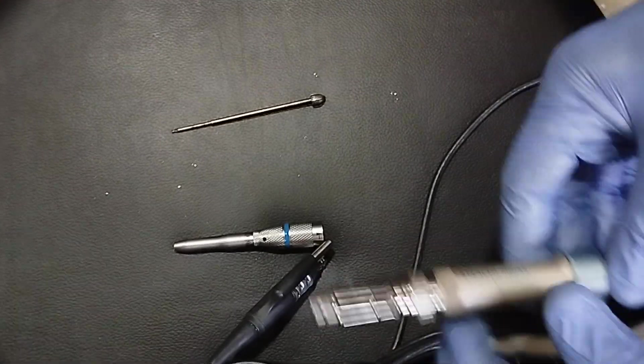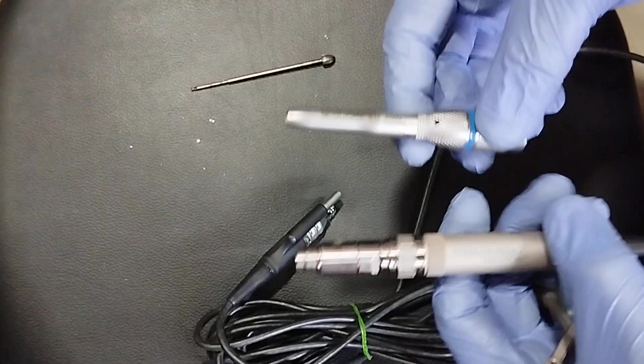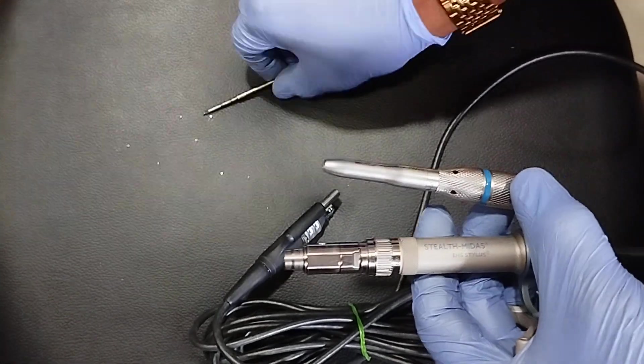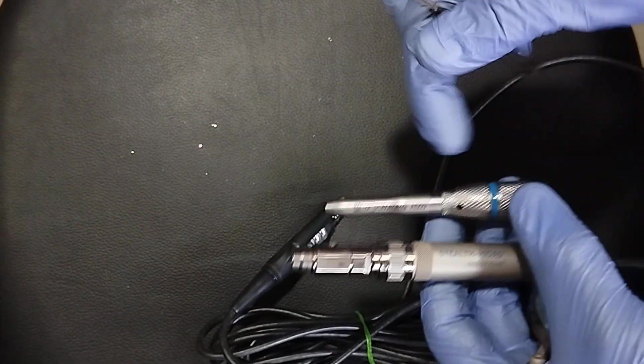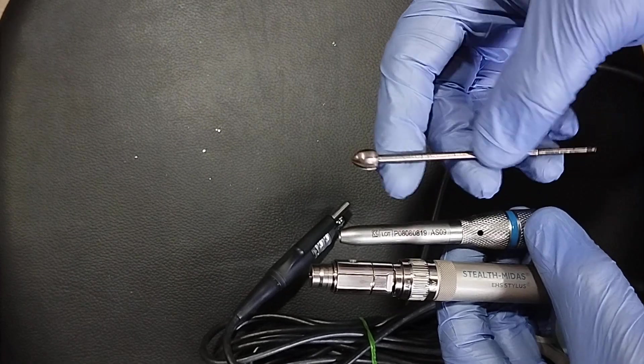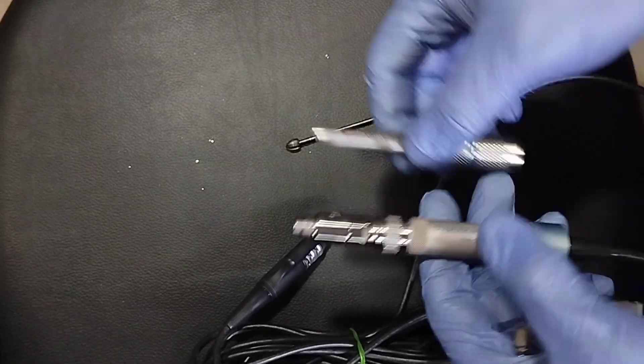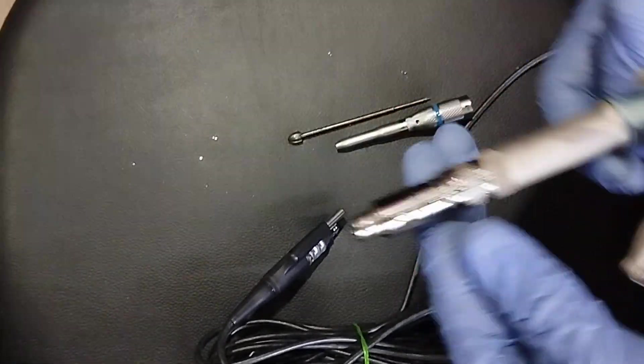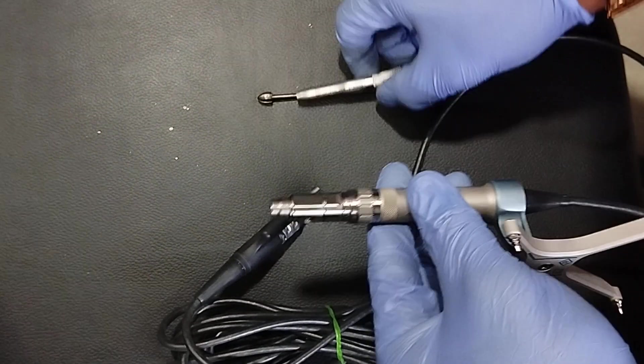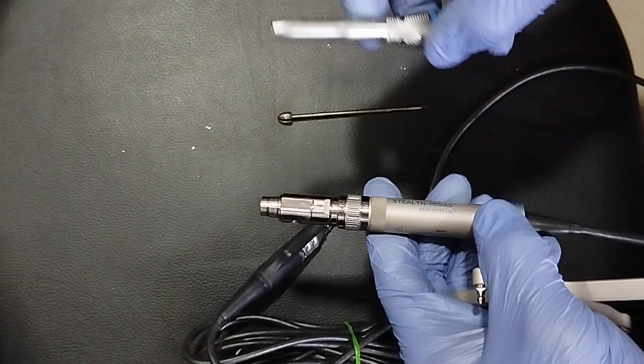So this is normal EM2O attachment, we call it AS09, and this is cutter account tool. I'm going to demonstrate how to set up this attachment along with this motor, because this is different from normal motor.